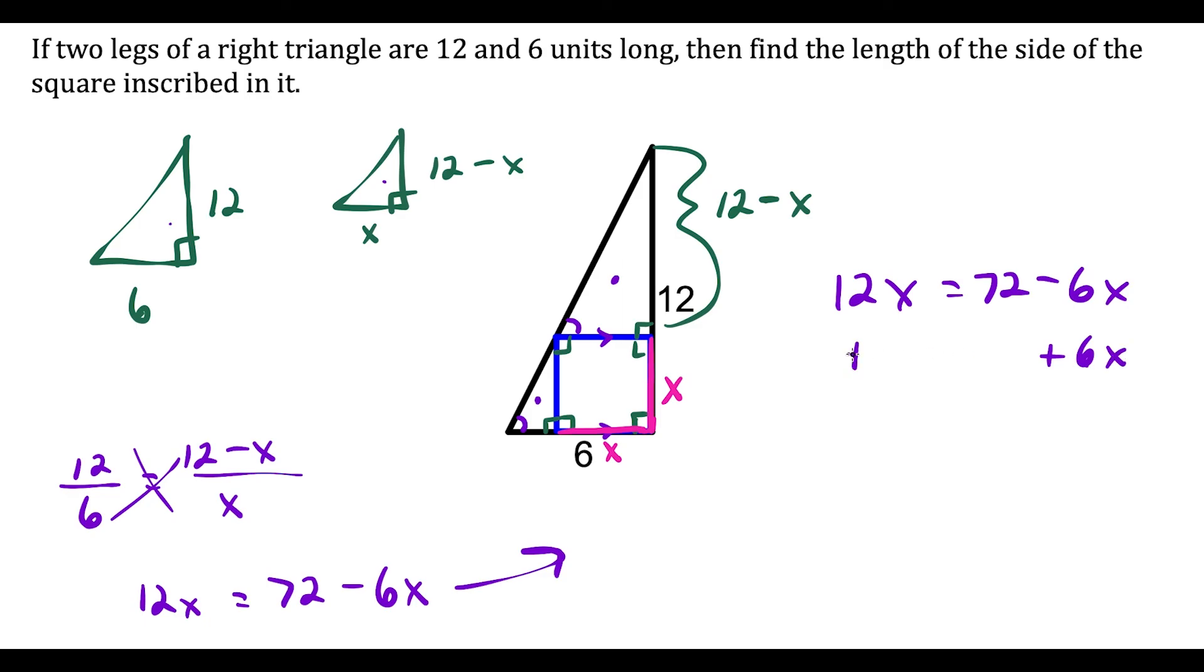Now we'll write this equation and solve: 12x equals 72 minus 6x. Add 6x to both sides and this tells us 18x equals 72. After these terms cancel, divide by 18, and the length of the side of the square inscribed in the right triangle is 4 units long.